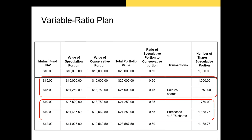In the reverse case, if the value of the speculative portion falls from $11,250 to $7,500, the ratio falls to the lower bound of our desired range — in this case, bounds of 0.35 and 0.6. We then liquidate part of the conservative portfolio and invest that in the speculative portion to get back up to a healthy ratio. This process can continue indefinitely.